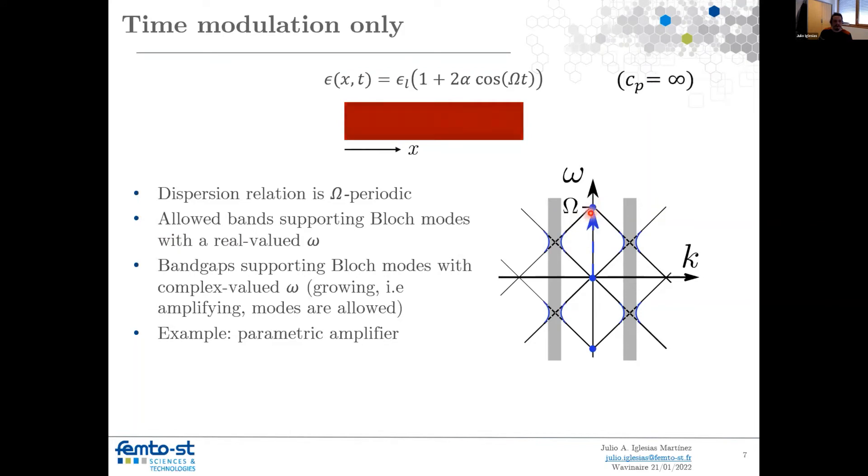Now we have omega periodicity in the frequency axis. Again, we have allowed modes in black and new kinds of gaps are open. These gaps now are in the k axis. This means that instead of having complex values of k, now we have complex values of omega.